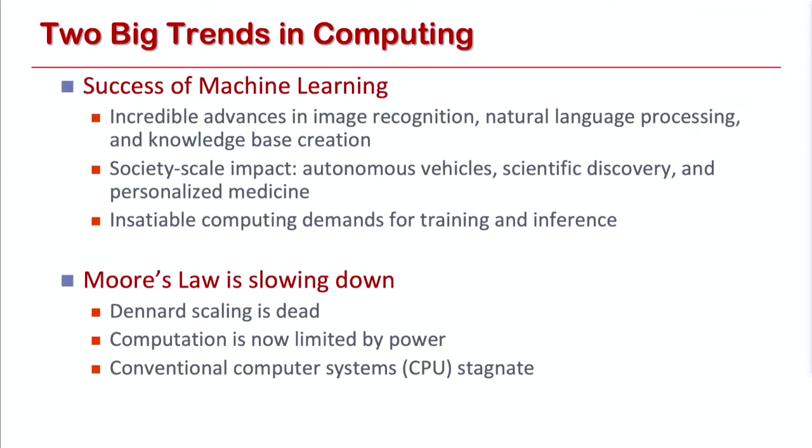At the same time, we're seeing this broad demand for higher computation, but the underlying way in which we provide this computation using silicon — driven by Moore's Law — is slowing down. As we heard from Tom Lee today, this is due both to physical limits and to economic limits. At $10 billion a fab, you can't continue to invest in ever more nodes that continue the pace of Moore's Law.